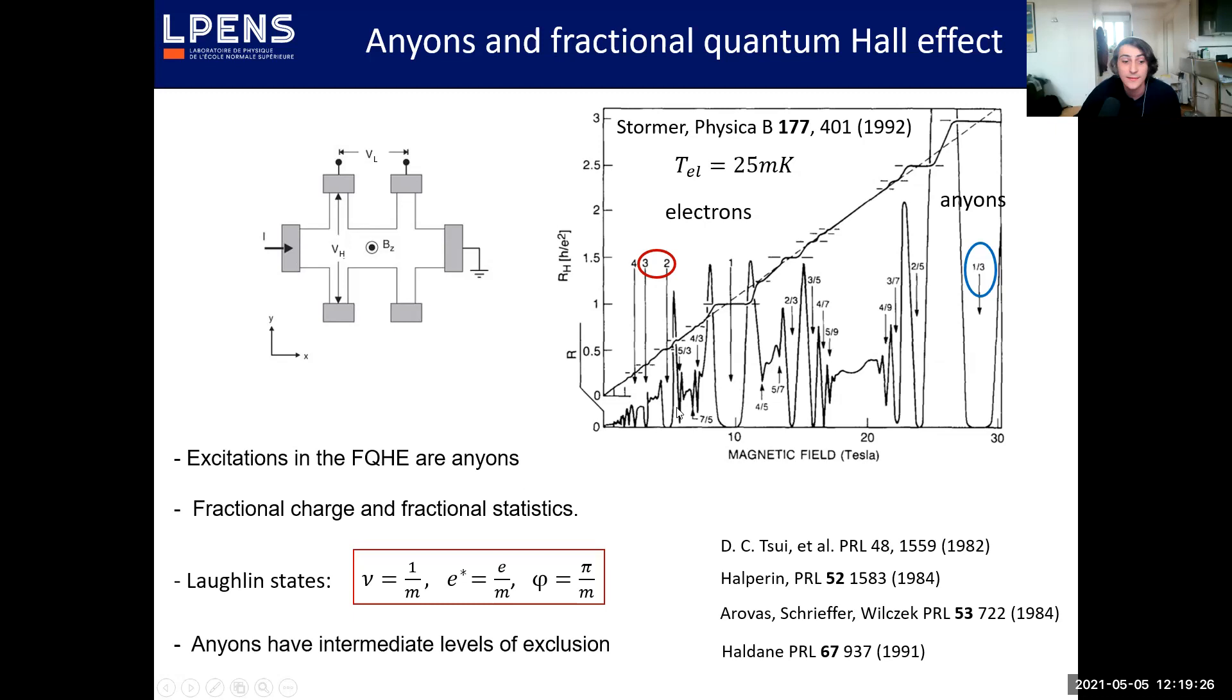So quickly after, the prediction was made that these excitations, these new excitations, are actually anionic. And they show both various fractional statistics. So today I will be interested in the so-called Laughlin state with a filling factor one over m with m odd integer that should host both a fractional charge e over m and a fractional statistic with the phase of π over m. So the typical example here would be for m equals three. It has also been shown that these anyons should obey some intermediate level of exclusion between boson and fermion and obey the generalized Pauli principle.